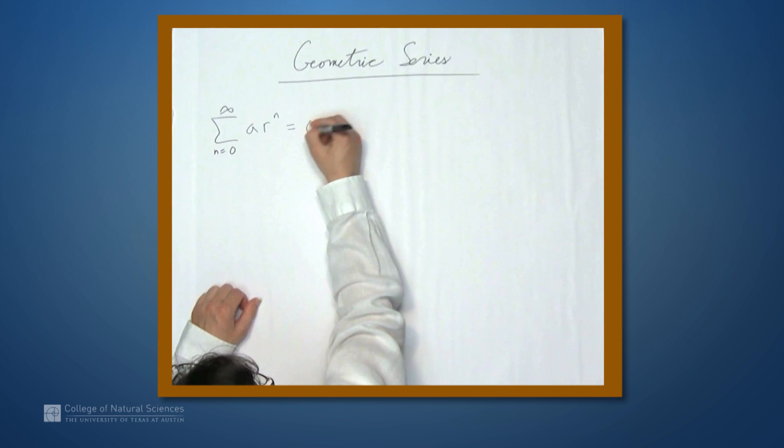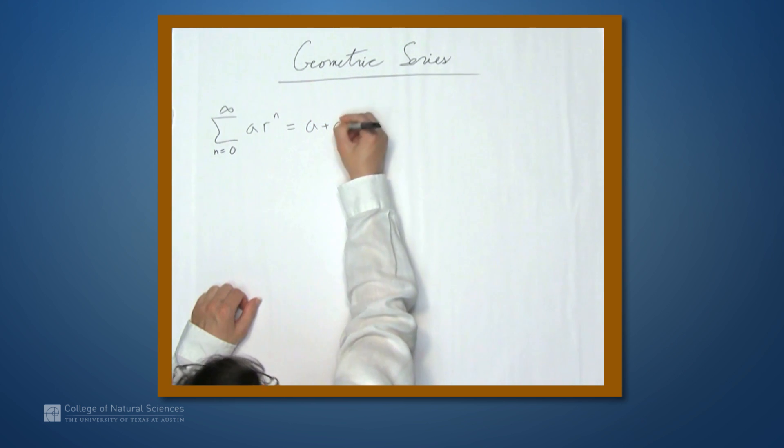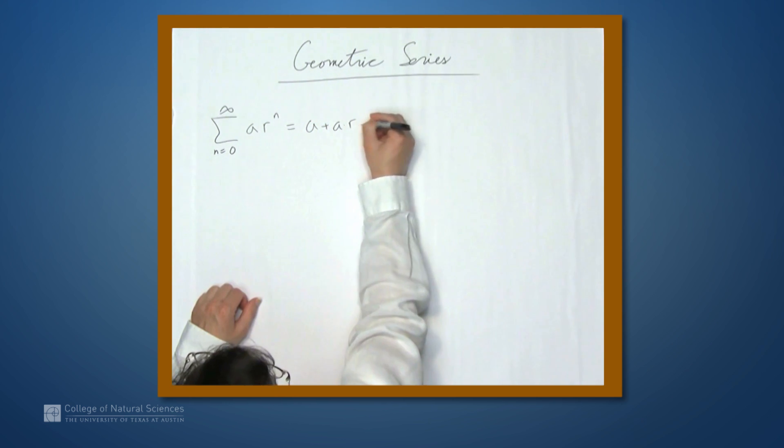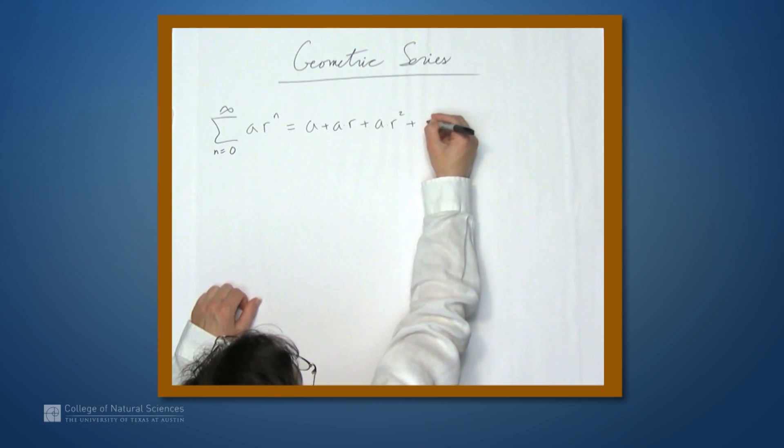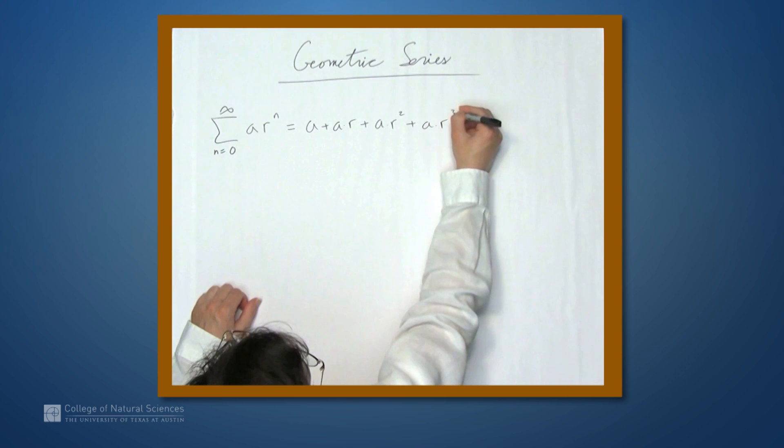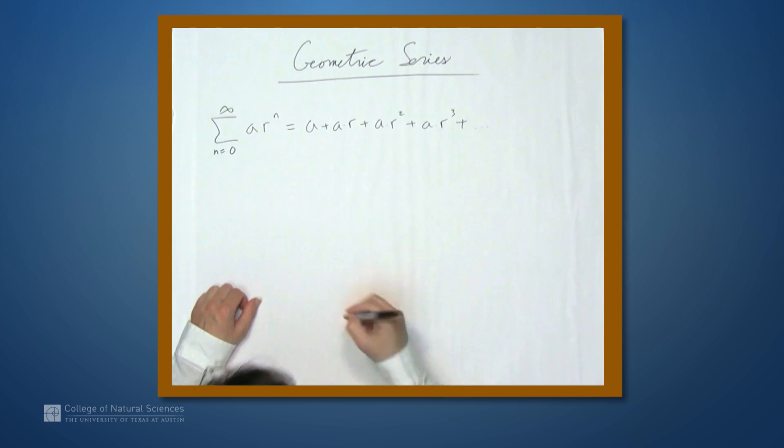So this is a plus a times r plus a times r squared plus a times r cubed, and so on. Now, it's always worth reminding you that, in general, you can't determine the exact value of a series if the series converges. Geometric series are maybe the best example of series where determining the exact value is not only possible, but in fact very easy.